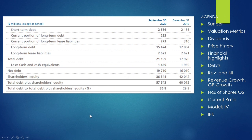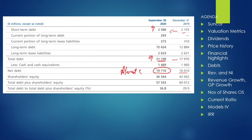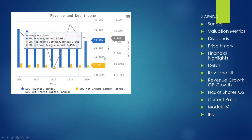Looking at their debt: the short-term debt has grown from $2.1 to $2.5 billion, and the overall debt has also increased. The total net debt is $19.7 billion — roughly a $3 billion increase year over year. The company is taking on more debt to survive during COVID-19, as production was stopped by the government, which was just recently lifted when I was analyzing the stock.